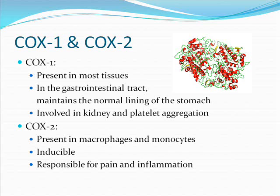COX-1 is present in most tissues, including the gastrointestinal tract, and it maintains the normal lining of the stomach. It is also involved in the kidneys and platelet aggregation. COX-2, by contrast, is only present in macrophages and monocytes. It is inducible and is only responsible for pain and inflammation.